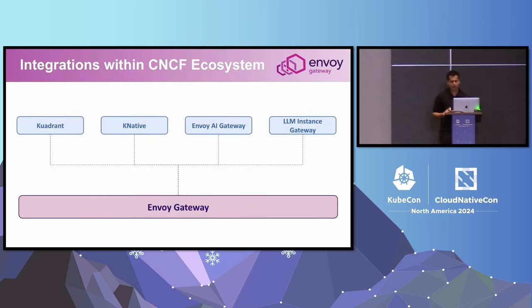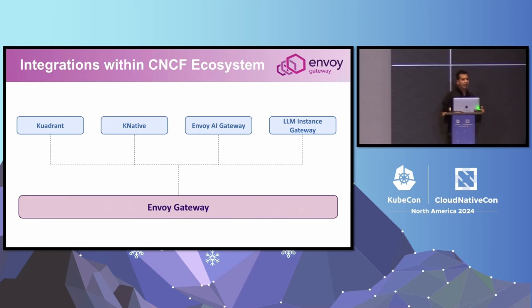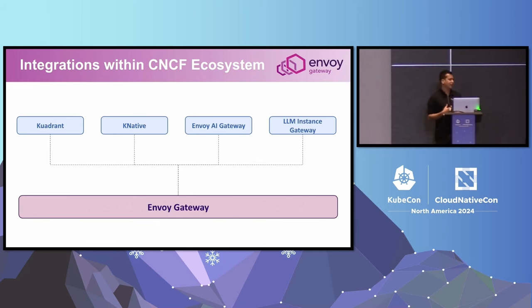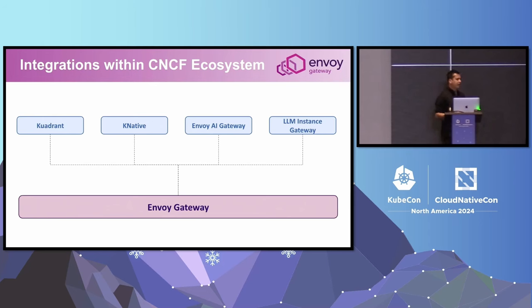Looking at the ecosystem, we're seeing many CNCF projects integrating Envoy Gateway for their ingress solution. Quadrant, a new CNCF sandbox project that adds additional policies like DNS policy and auth policy on top of Gateway API, has recently added native support for Envoy Gateway. Knative, the serverless platform, is integrating with Gateway API and has added Envoy Gateway into its conformance testing suite.